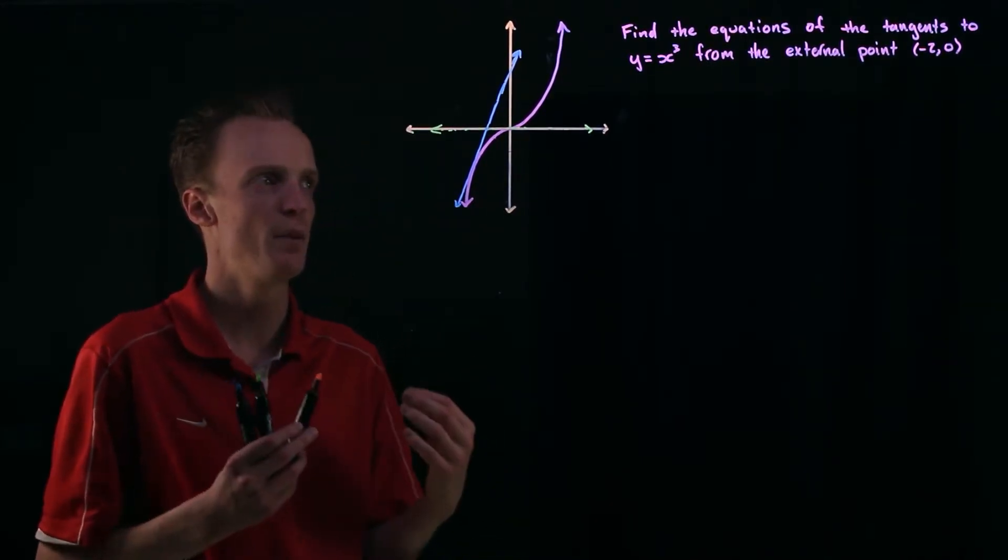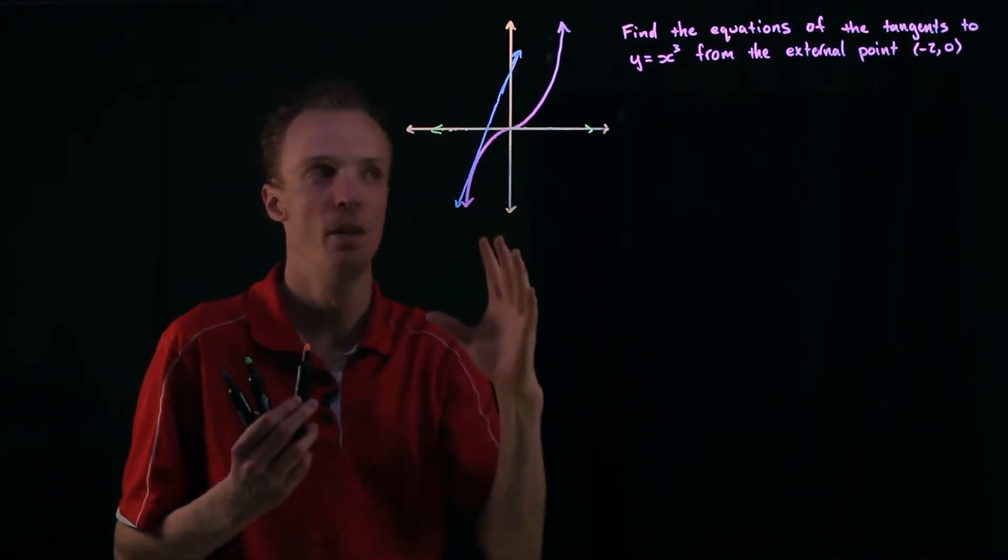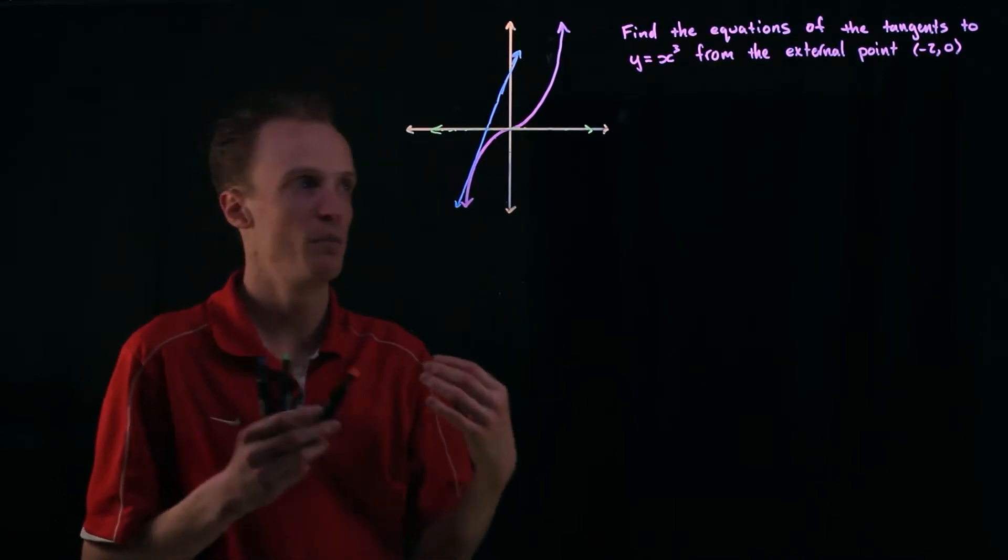So what we're going to do here is we're going to start by describing any linear line that we can draw from this point. All of them. Literally all of them. And we're going to do that using our gradient point form.